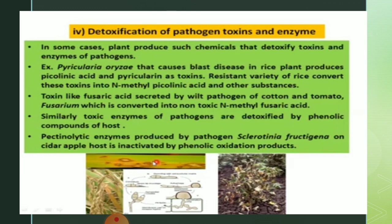Toxins like fusaric acid secreted by the wilt pathogen of cotton and tomato, Fusarium, are converted into non-toxic N-methyl fusaric acid by resistant host plants. Similarly, toxic enzymes of pathogens are detoxified by phenolic compounds of the host. Pectolytic enzymes produced by the pathogen Sclerotinia fructigena on cider apple host are inactivated by phenolic oxidation products.